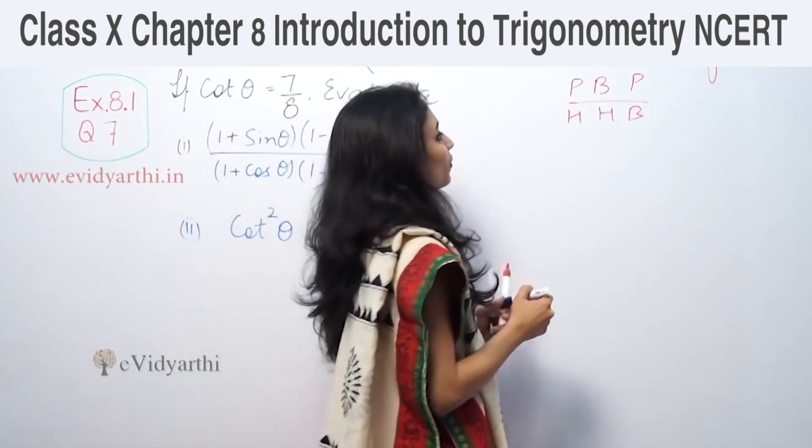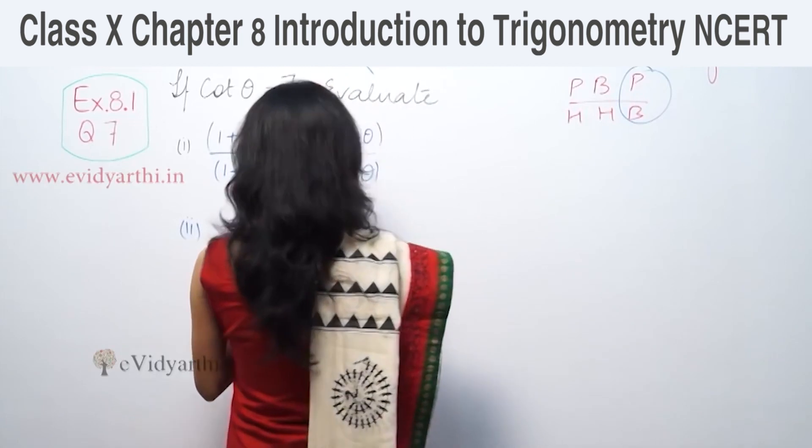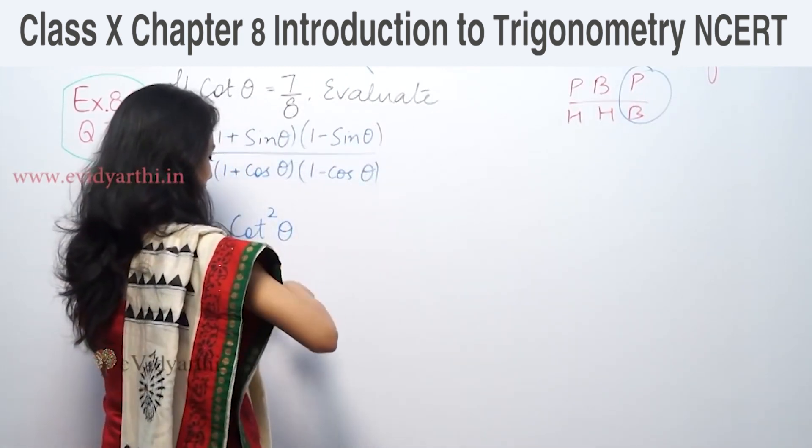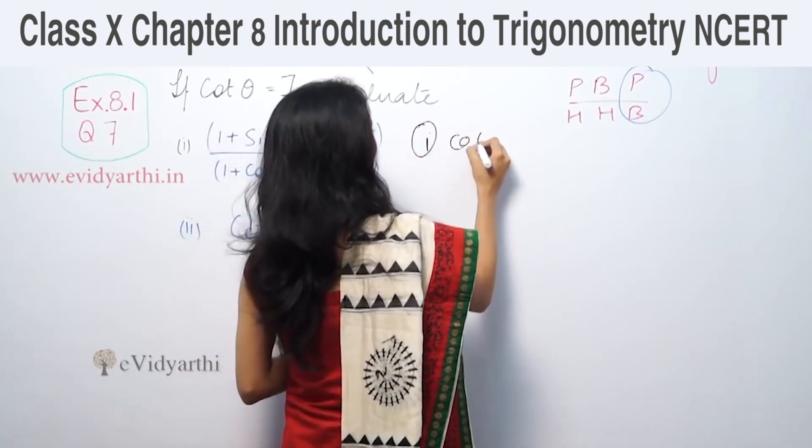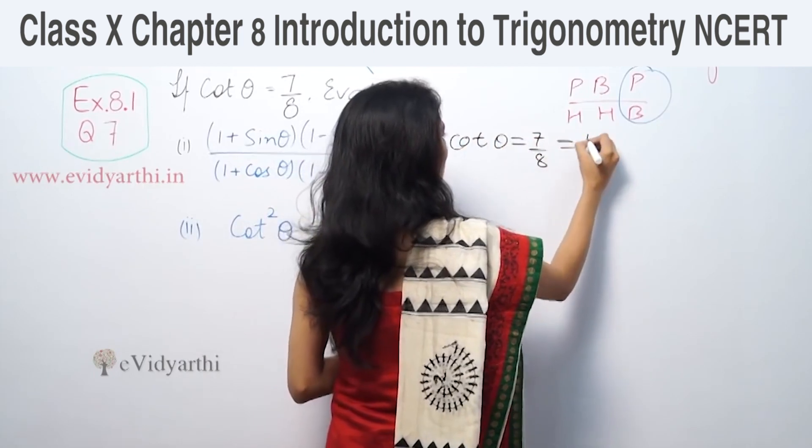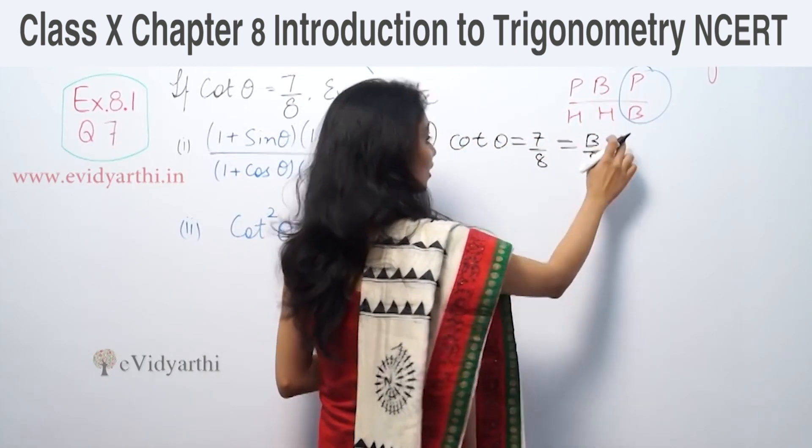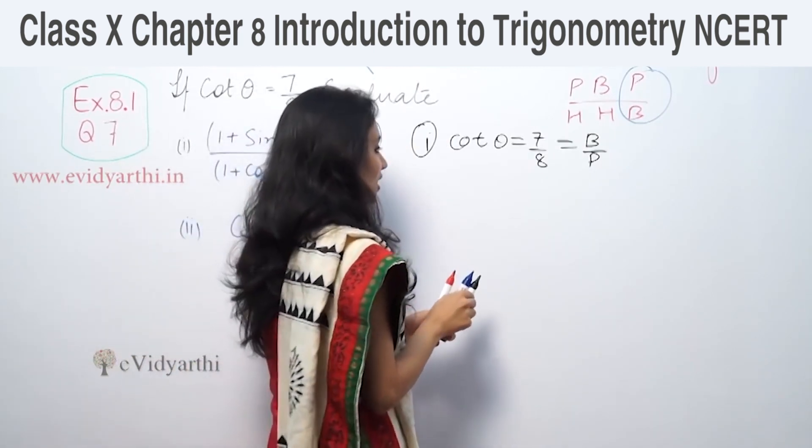So here cos θ is b by h. That means cos θ is equal to 7 by 8 equals base by hypotenuse. So these are the base and perpendicular, but hypotenuse is not given. So hypotenuse will be found using Pythagoras theorem.